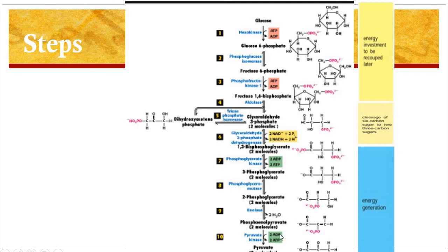These are the 10 steps involved in the glycolysis pathway. But in anaerobic conditions, this pyruvate is reduced to lactate by the enzyme lactate dehydrogenase. In aerobic conditions, the pyruvate enters the citric acid cycle for complete oxidation. If glycolysis takes place in anaerobic conditions, then this pyruvate is reduced to lactate.